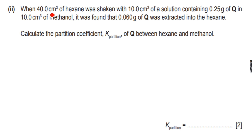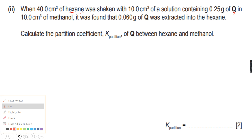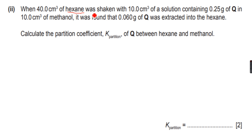Now we'll do an exercise on partition coefficients. When 40 cm³ of hexane was shaken with 10 cm³ of a solution containing 0.25 grams of compound Q in 10 cm³ of methanol, it was found that 0.06 grams of Q was extracted into the hexane. Calculate the partition coefficient KPC of Q between hexane and methanol.